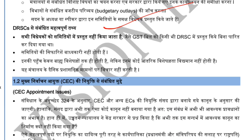This is a very important thing about DRSCs — not all bills are referred to DRSCs. For example, the GST bill was not referred to DRSCs. Bills that don't fall under the committee's business scope are also not referred. There are certain categories of legislation that are exempt from being sent to these standing committees.